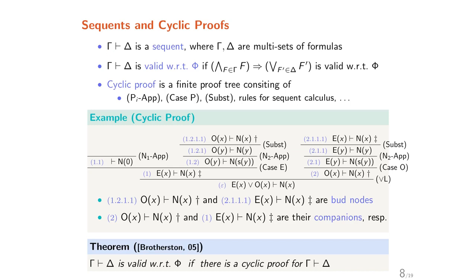About sequents and cyclic proofs: a sequent of the form gamma ⊢ delta is called a sequent, where gamma and delta are multi-sets of formulas. If all the formulas in gamma can make at least one formula in delta true with respect to phi, then the sequent is valid with respect to phi. A cyclic proof is a finite proof tree consisting of applications of case, subst, and rules for the sequent calculus.